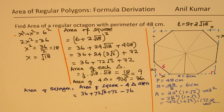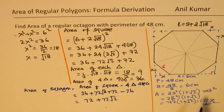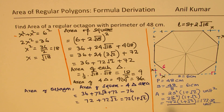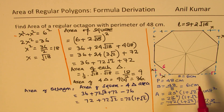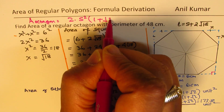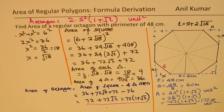Area of octagon = area of square minus 4 triangle areas = (36 + 72√2 + 72) − 36 = 72 + 72√2 = 72(1 + √2). This is exactly the same result as our formula gives — the formula works! So in any case, the area formula for a regular octagon is 2 × s² × (1 + √2) square units. I hope the steps are absolutely clear. Feel free to write your comments, share your views, and if you like and subscribe to my videos, that would be great. Watch other related videos on area and perimeter. Thanks for your time and all the best.